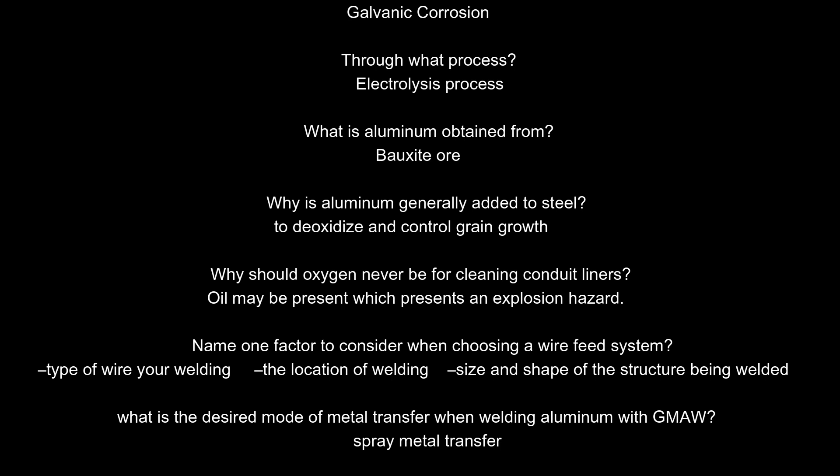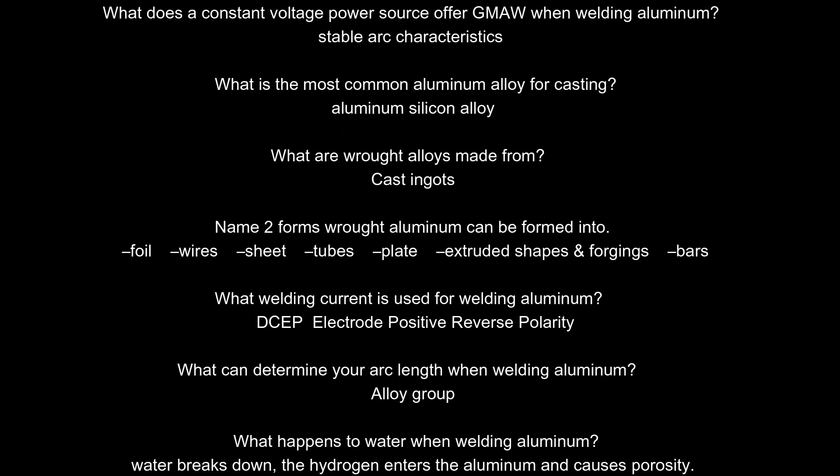Why is aluminum generally added to steel? To deoxidize and control grain growth. Why should oxygen never be used for cleaning conduit liners? Oil may be present, which presents an explosion hazard. Name one factor to consider when choosing a wire feed system. Type of wire, location of welding, size and shape of the structure being welded. What is the desired mode of metal transfer when welding aluminum with GMAW? Spray metal transfer. What does a constant voltage power source offer GMAW when welding aluminum? Stable arc characteristics.